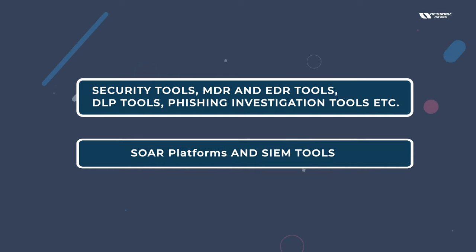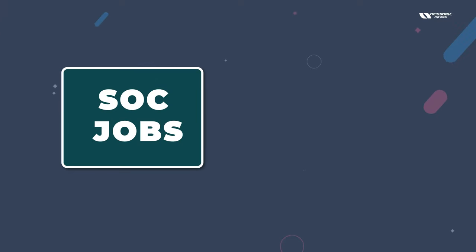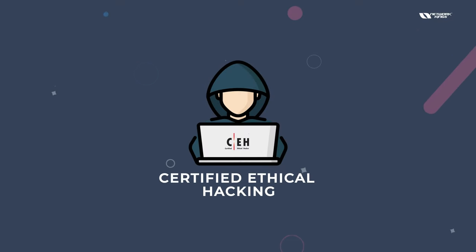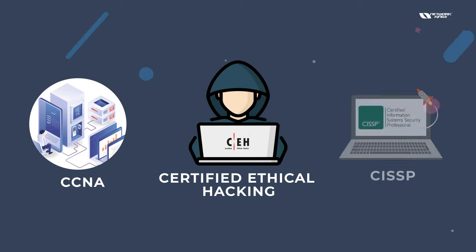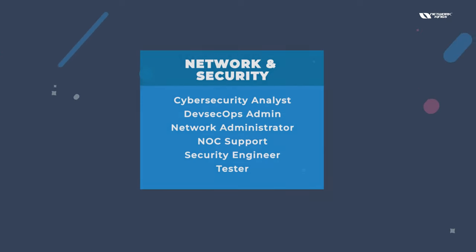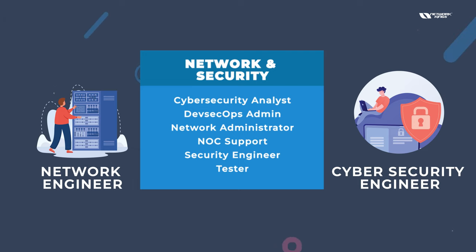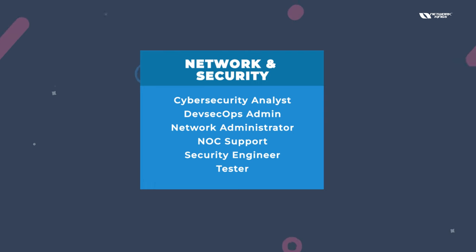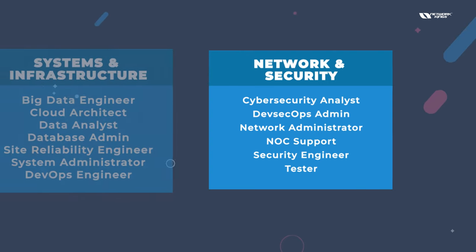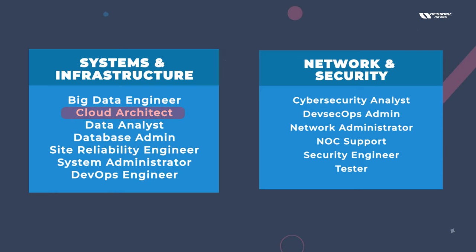If you want to get SOC or NOC jobs, you might need to learn Certified Ethical Hacking, CCNA, or CISSP. Network and security are now combined in most companies, meaning network engineers and cyber security engineers often work under one department — the network and security department — while cloud engineers and DevOps engineers work under system and infrastructure.